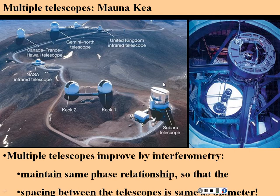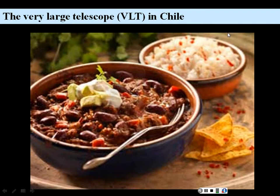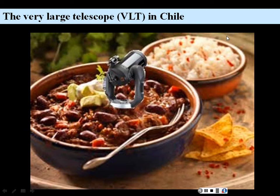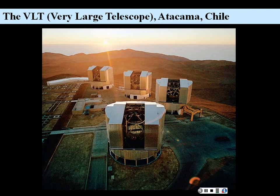If we can maintain the same phase relationship, we can treat two telescopes as one large telescope, increasing our diameter, light-gathering power, and resolution. Here's another example: the Very Large Telescope, or VLT, in Atacama, Chile — actually four telescopes — allowing better resolution. If you can get these four into phase, the effect is equivalent to having a telescope the size of the spacing of all four telescopes.